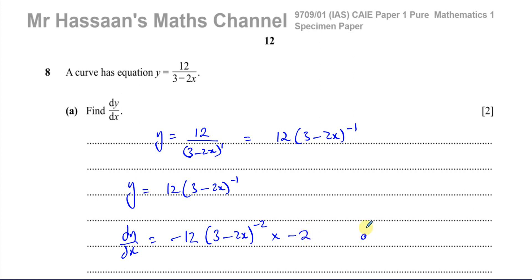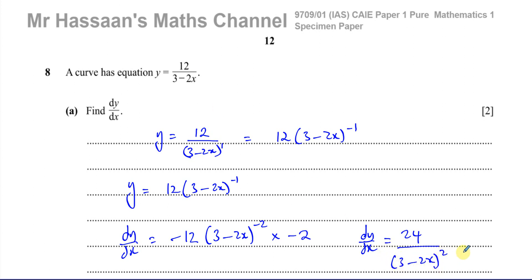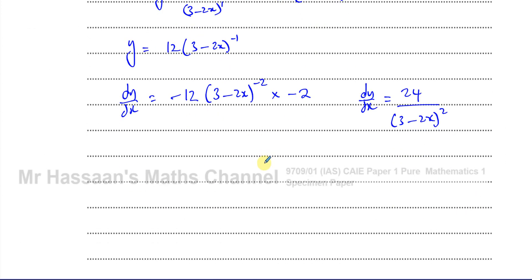Multiplying through gives us dy/dx equal to positive 24, and 3 minus 2x to the power of negative 2 is the same as writing 24 divided by 3 minus 2x squared. So dy/dx equals 24 over (3 minus 2x) all squared — that's the answer to Part A.